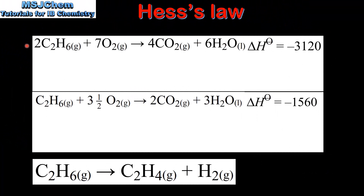We'll start by looking at the first equation. In this reaction we have the enthalpy change for two moles of ethane, but in our final equation we only have one mole of ethane. So we need to divide all the coefficients in the top equation by two. This gives us one mole of ethane, three and a half moles of oxygen, two moles of carbon dioxide and three moles of water. Because we've halved all the coefficients in the reaction we also need to halve the enthalpy change.